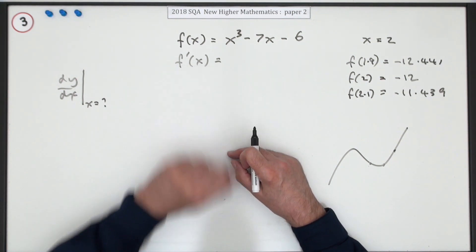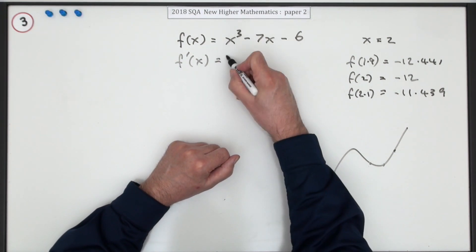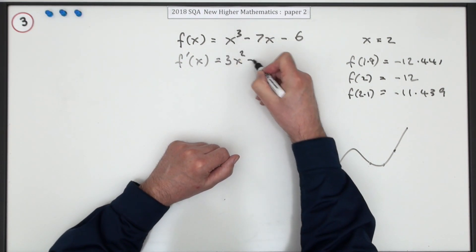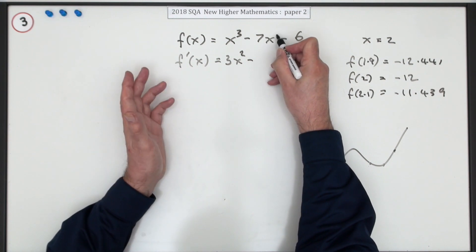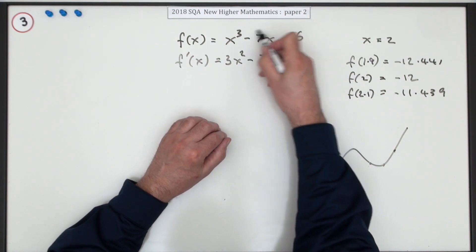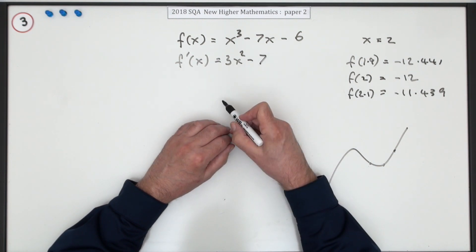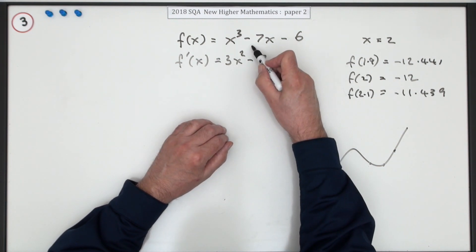Right, so differentiate it. Multiply by the power, take one off the power. Power's one there if you like, so that just goes to a seven because a one drops to zero and x to the zero is one. But it's best just to remember that as if it's a linear term, then its derivative will just be the coefficient.